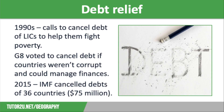Firstly, that they were not corrupt. Secondly, that they could manage their finances effectively — i.e. they couldn't get into debt again and expect to have their debts written off in the future. And thirdly, that they would spend the money they were saving by not having to repay their loans on things that would help reduce poverty, such as education and healthcare.